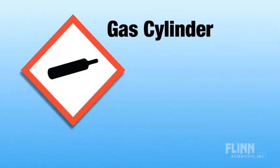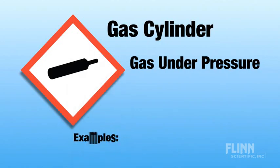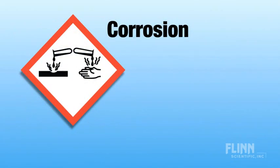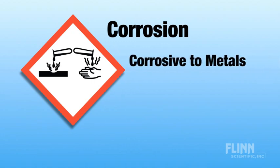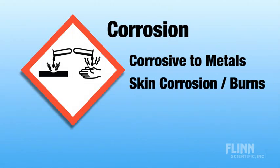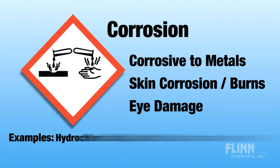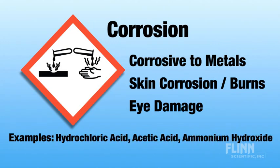The fourth pictogram is a gas cylinder, and this is self-explanatory for gases that are under pressure — examples include hydrogen, oxygen, and so on. The corrosion pictogram is used for both physical and health hazards. It's used for anything that is corrosive to metals or, more importantly, that will cause skin corrosion, skin burns, and permanent eye damage. Examples of chemicals that require the corrosion pictogram include hydrochloric acid, acetic acid, ammonium hydroxide, and so on.